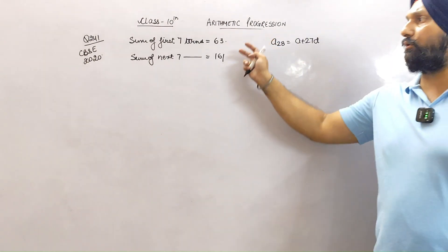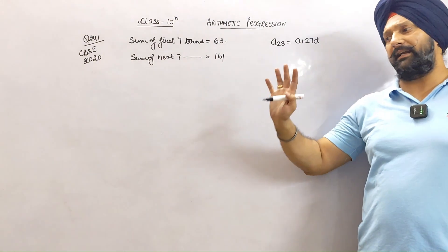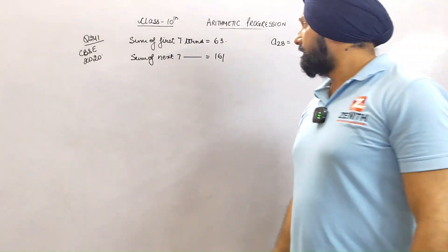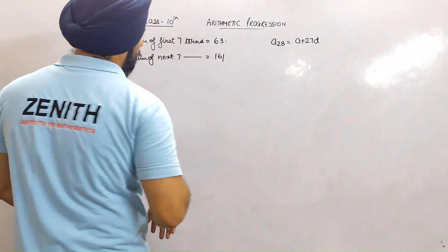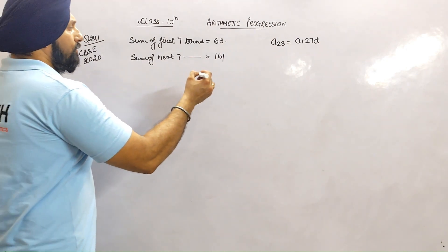But because we have two pieces of information, we can utilize this. We can find out a as well as d. Is this point clear? Let's go to the answer.